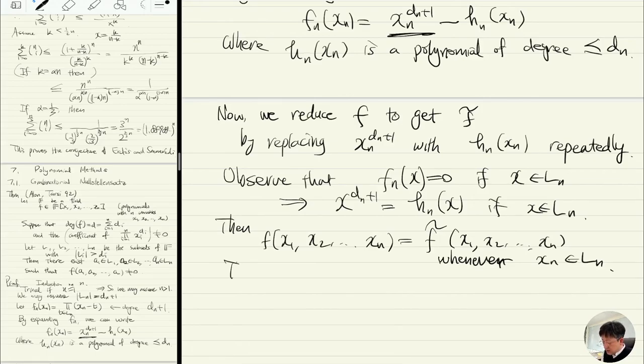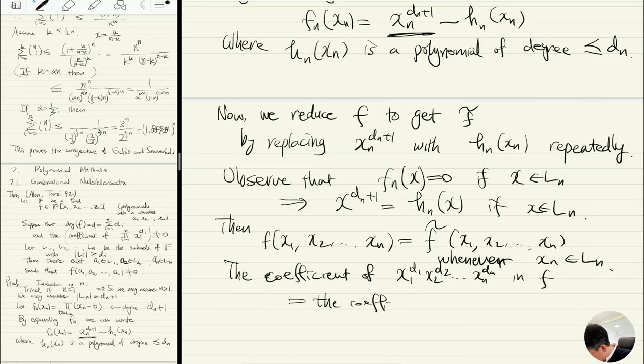What about the coefficient? The coefficient of x1^d1·x2^d2·...·xn^dn in f is equal to the coefficient of x1^d1·x2^d2·...·xn^dn in f-tilde.